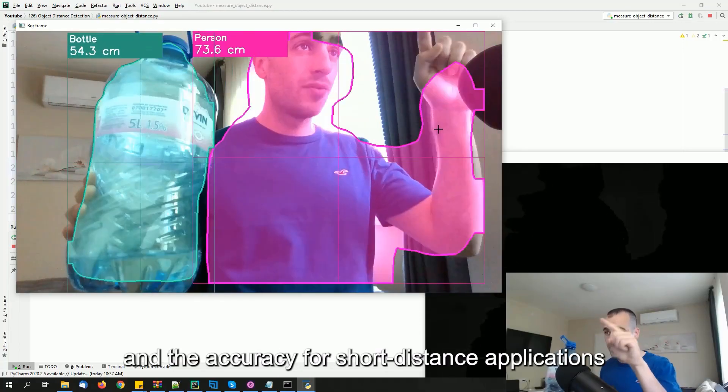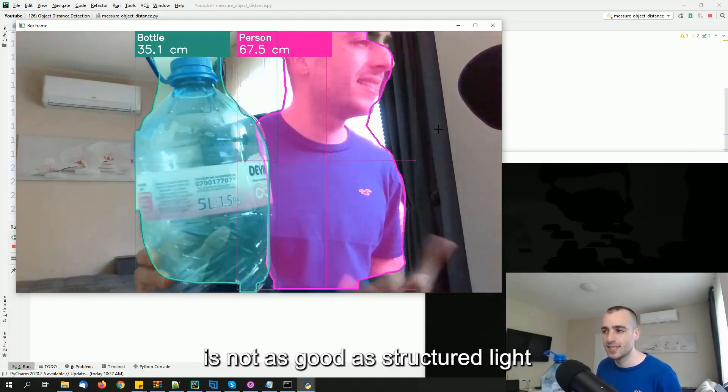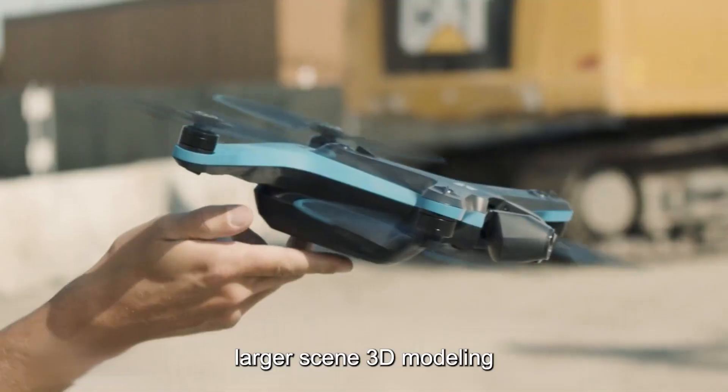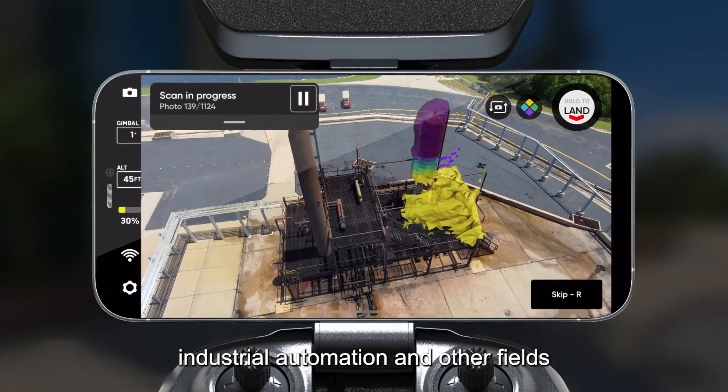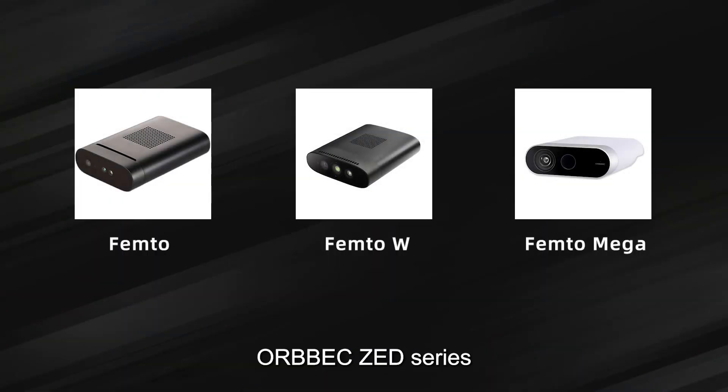ToF is more suitable for dynamic scenes. The accuracy is poor, and the accuracy for short-distance applications is not as good as structured light. Currently, it is mostly used in fields such as unmanned driving, larger scene 3D modeling, industrial automation and other fields, such as Orbbec Femto series.